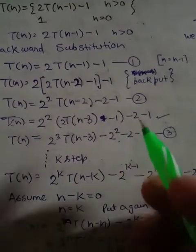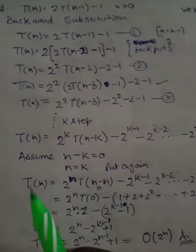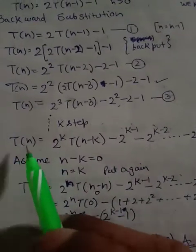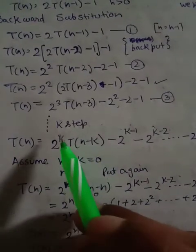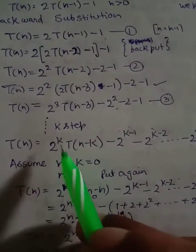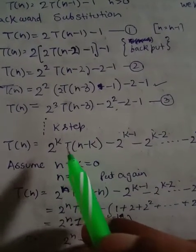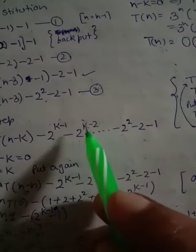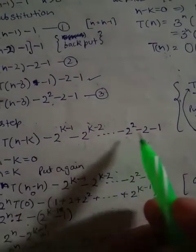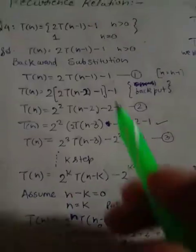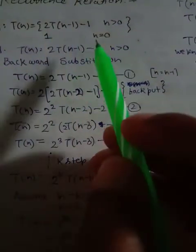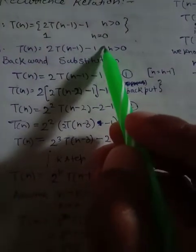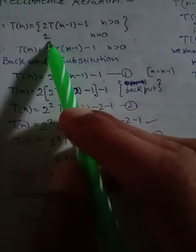After k steps, we get the general formula: T(n) = 2^k · T(n-k) - 2^(k-1) - 2^(k-2) - ... - 1. We use the base condition T(0) = 1.